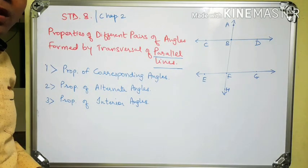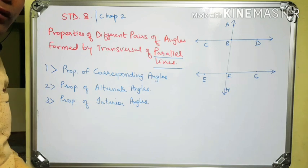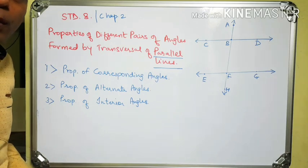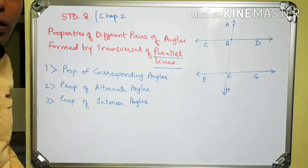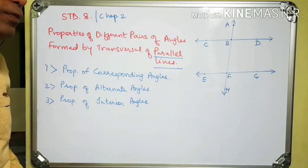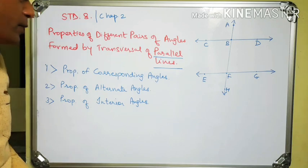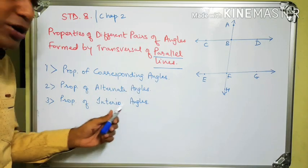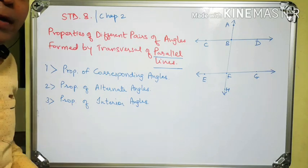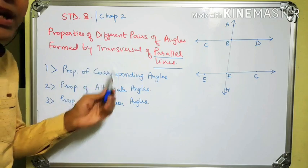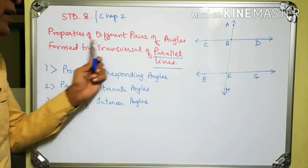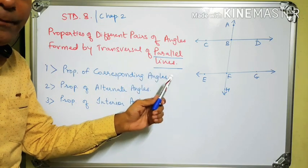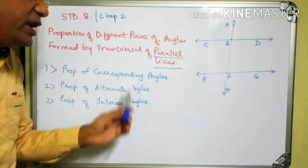Hello dear students. In the last video we saw what are the different pairs of angles formed by a transversal of two lines. Those pairs of angles were pairs of corresponding angles, pairs of alternate angles, and pairs of interior angles. Today we have to understand what are the properties of these different pairs of angles formed by a transversal of parallel lines.